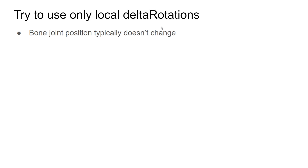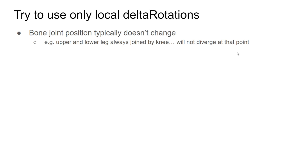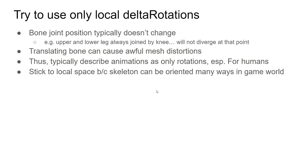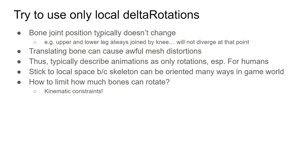The parenting system for skeletons works the same as for game objects — children follow parents but not vice versa, so moving the hip bone moves the entire skeleton. We typically only describe skeletal animations as rotations, especially for humans or living creatures. Your joint positions don't actually change — your knee joint never splits such that upper and lower leg diverge. Translating bones can also cause really horrible mesh distortions, which is why we stick to rotations, especially local delta rotations relative to the body.